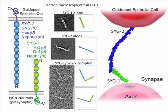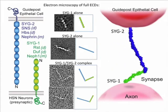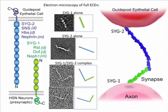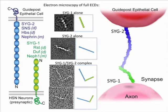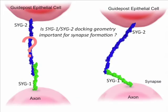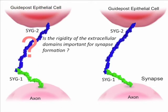From this we were able to construct a molecular model for the full extracellular complex of SIG1 and SIG2 that would bridge the synapse in C. elegans, and this generated a number of testable hypotheses. First, is this orthogonal docking geometry important for synapse formation? To test this, we replaced the N-terminal binding domains of SIG1 and SIG2 with those from other IG domain pairs that dock in a different geometry, and put them into C. elegans. Second, we asked if the rigidity of the extracellular domains was important, by introducing flexible linkers between select IG domains of SIG2 and examining the function of these molecules in vivo.